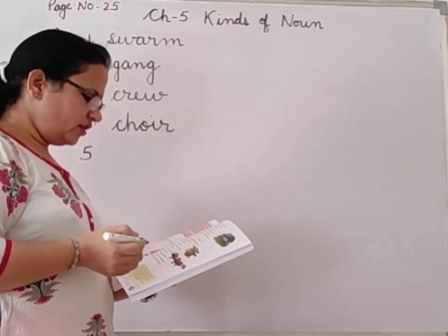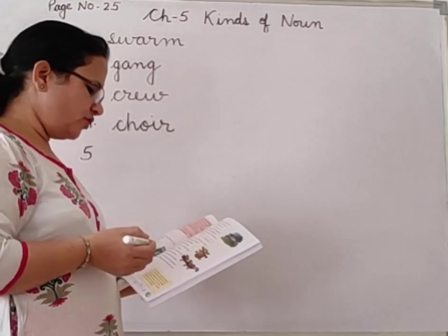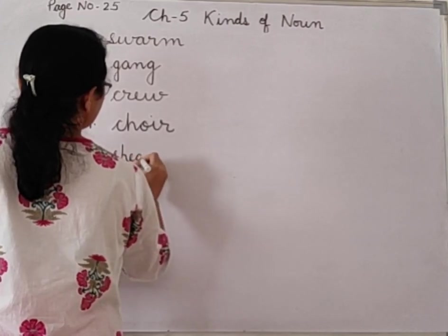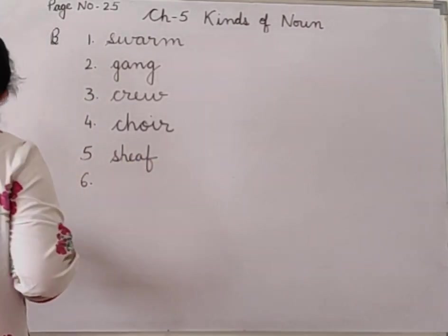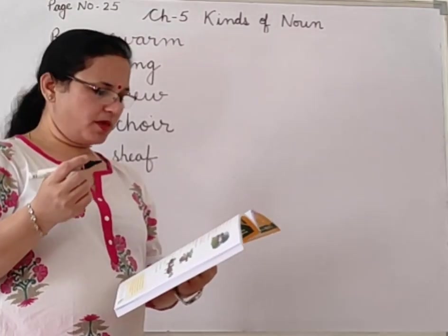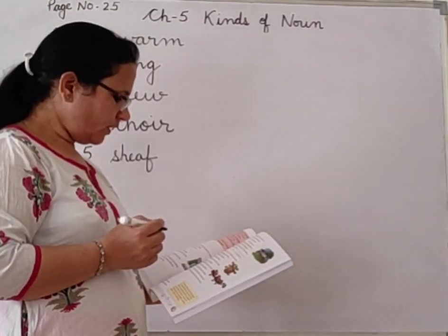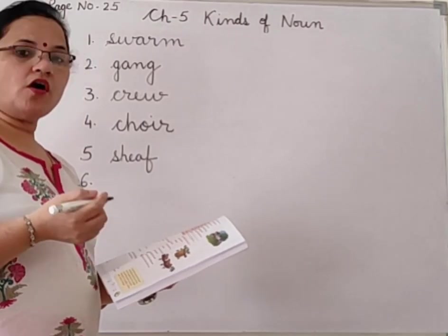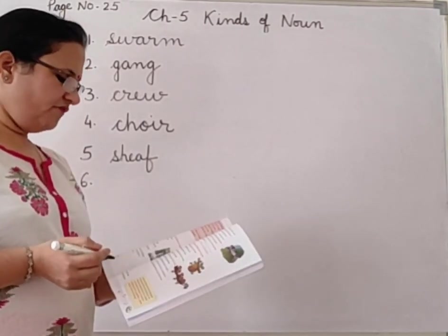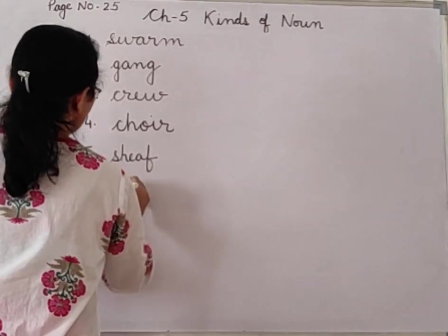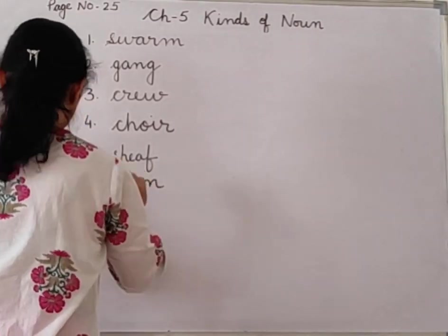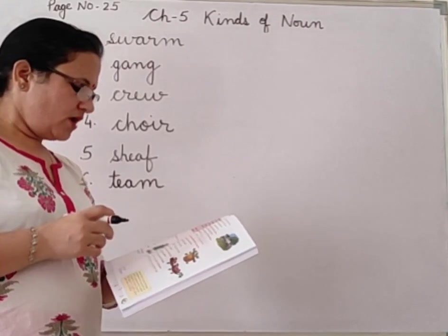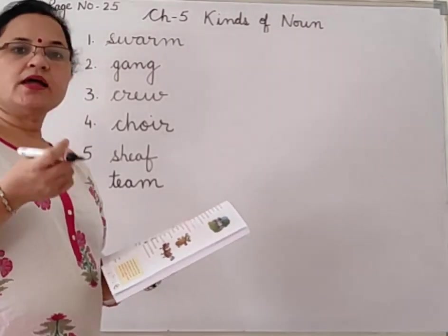Fifth: 'Do not touch that dash of papers.' Sheaves of papers — S-H-E-A-F — sheaves of papers. Sixth: 'A dash of horses gallop across the field.' The collective noun for horses is team — a team of horses. There are three other collective nouns also used for a group of horses: stud, rug, and harras. But in your book it is given as team of horses.